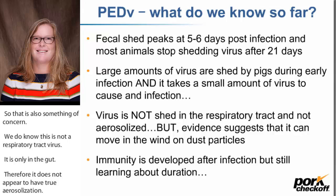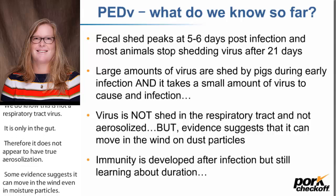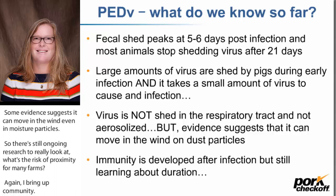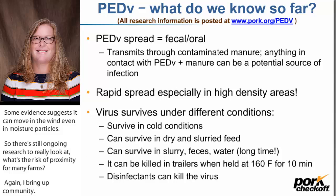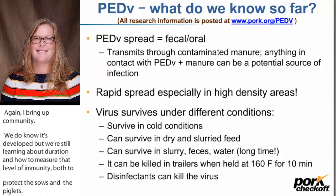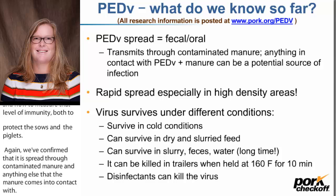We know immunity is developed, but we are still learning about its duration and how to measure the level of immunity to protect sows and piglets. We've confirmed that PED is spread through contaminated manure and anything manure comes into contact with. Spread can happen very rapidly in high-hog-density areas, but we've also seen it spread in areas where we would not expect infection, making it a confounding virus.